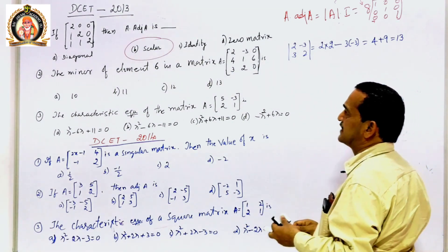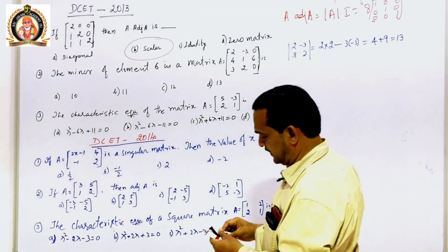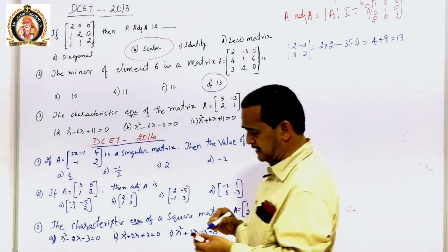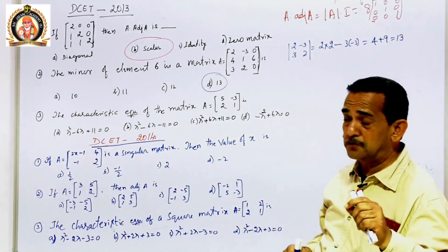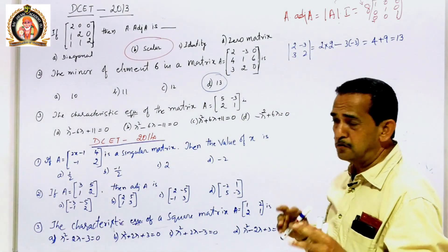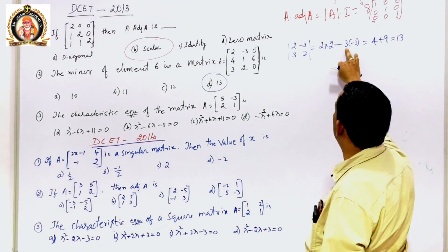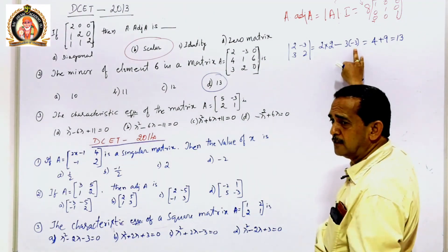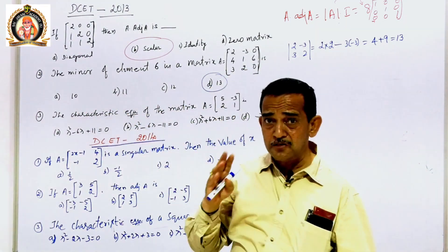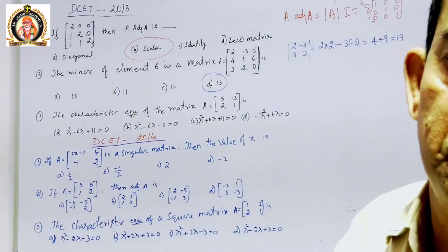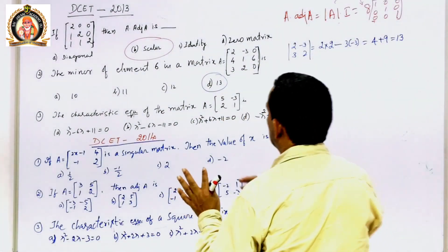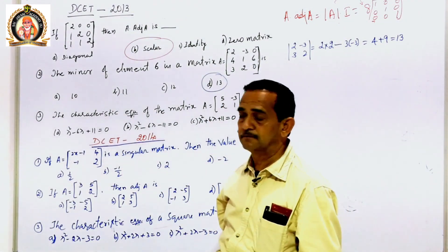The answer is 13. Now be careful: the question paper also gives 10 as a wrong option. If you mistakenly compute 3×3 = 9 and add 4 + 6 = 10, you'll pick the wrong answer. The question setters deliberately include answers corresponding to common mistakes. Do not be in a hurry. Take care of that.